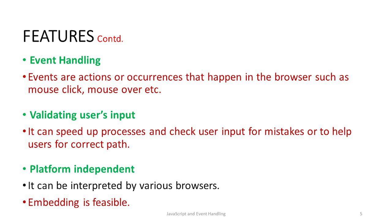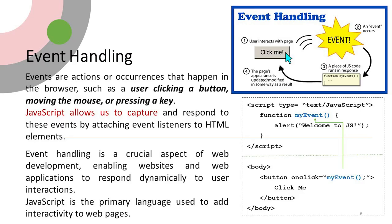Event handling refers to events — actions or occurrences that happen in the browser, such as a user clicking a button, moving the mouse, or pressing a key. JavaScript allows capturing and responding to these events by attaching event listeners to HTML elements. Event handling is a crucial aspect of web development, enabling websites to respond dynamically to user interactions.